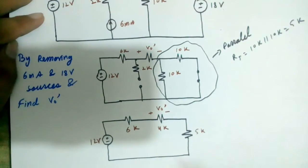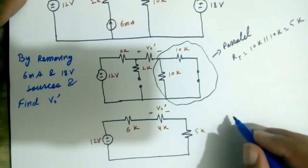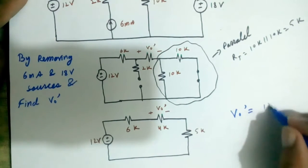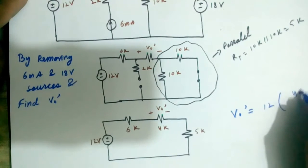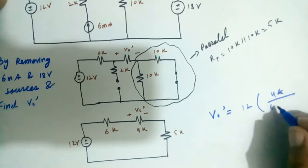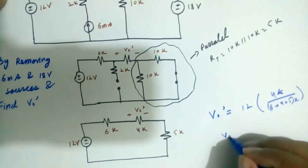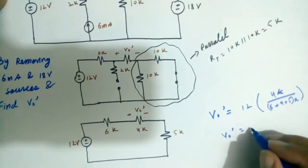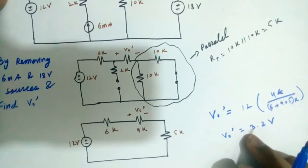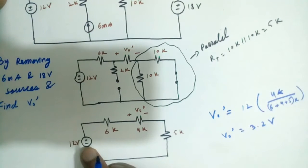We want to find V0. V0 can be found by the voltage divider rule. V0 is equal to 12 into 4K divided by 6 plus 4 plus 5K. So V0 dash is equal to 3.2 volts. This is the V0 voltage due to the 12 volt voltage source.